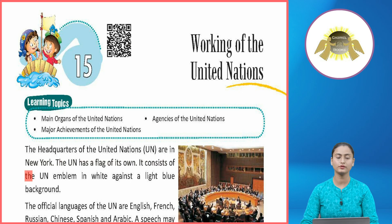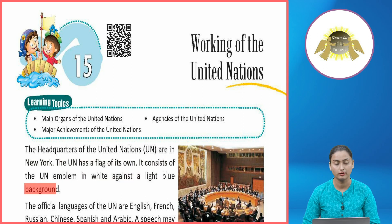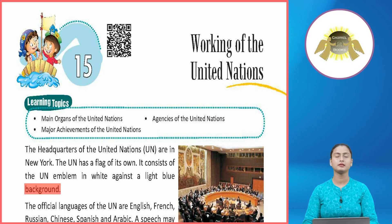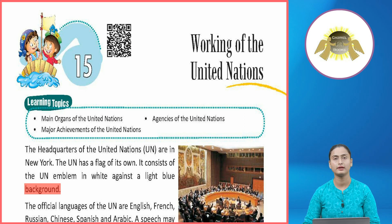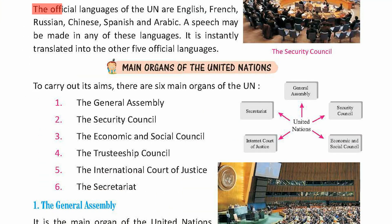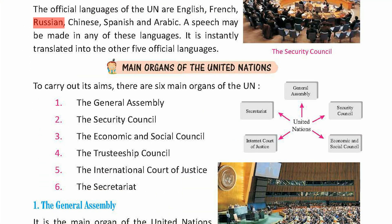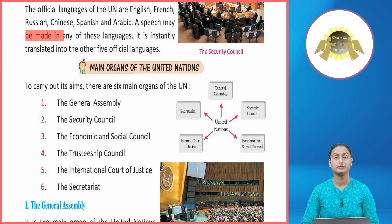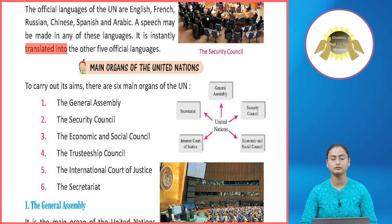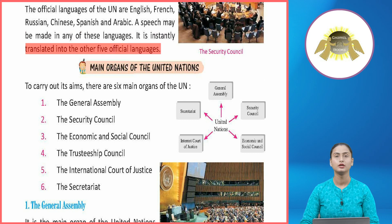The UN flag consists of the UN emblem in white against a light blue background. United Nations ke headquarters New York mein hain, aur iska apna ek emblem hai jo blue and white color ke combination mein hai. The official languages of the UN are English, French, Russian, Chinese, Spanish, and Arabic. A speech may be made in any of these languages and is instantly translated into the other five official languages.